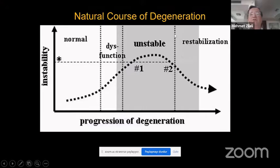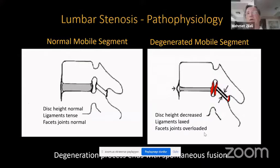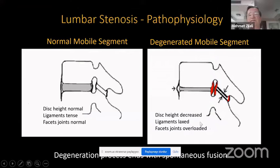During the restabilization phase, we must not do any fusion surgery — just decompression will be okay. But in one patient, there may be different levels at different phases: one level unstable, another in restabilization, another in dysfunctional phase. In a degenerated normal mobile segment, disc height decreases, ligaments become lax, and facet joints get overloaded. In fact, there is no true ligament hypertrophy — because ligaments are lax and shortened, we see them as if they are hypertrophic.